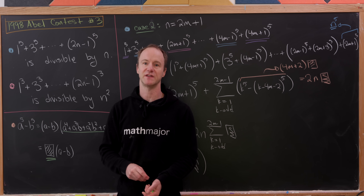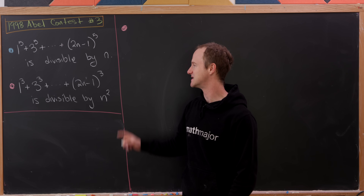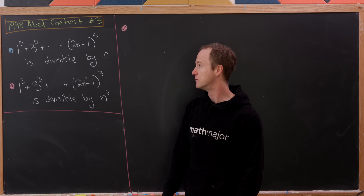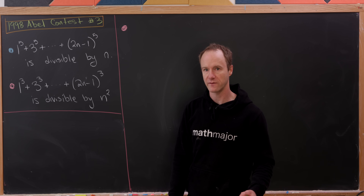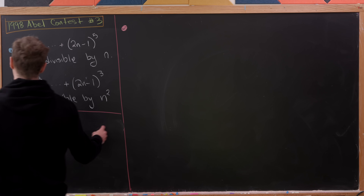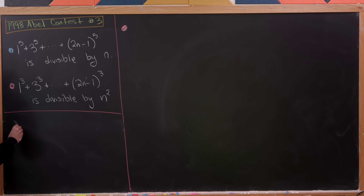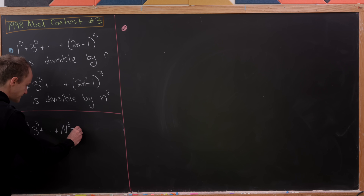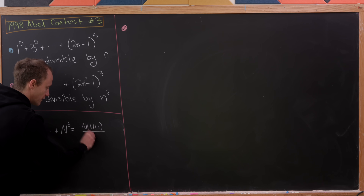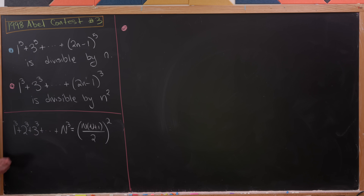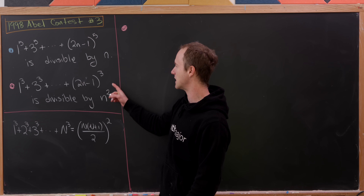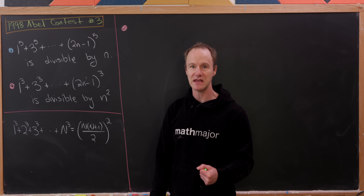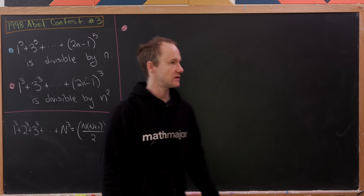Now moving on to the second part, where we're summing cubes. We'll use the well-known formula: 1 cubed plus 2 cubed plus 3 cubed ending at N cubed equals N times N plus 1 all over 2, squared. We can't apply it directly since we're summing only odd numbers, so we'll add in the evens and then subtract them.